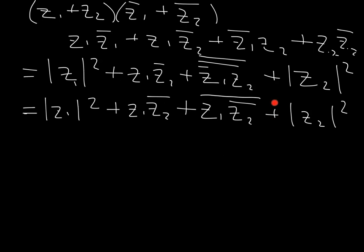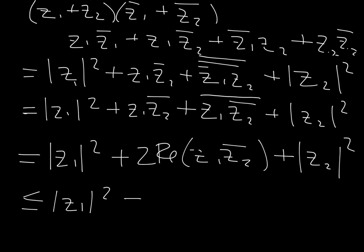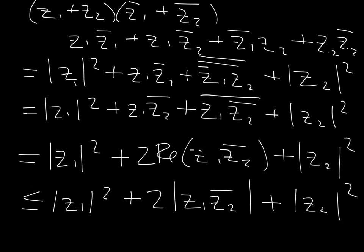This term right here is one of our expressions for the real part of z1 times z2 conjugate. So this is equal to the absolute value of z1 squared, plus two times the real part of z1 times z2 conjugate, plus the absolute value of z2 squared. Now I'll use the first fact: the real part is less than or equal to the absolute value, so this is less than or equal to the absolute value of z1 squared, plus two times the absolute value of z1 times z2 conjugate, plus the absolute value of z2 squared.